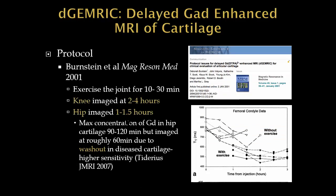After injection, the patient exercises the joint — either flexion and extension or walking on a treadmill for about 10 to 30 minutes. The knee joint is imaged at about 2 to 4 hours because it has thicker cartilage; the hip is imaged a little faster at 1 to 1.5 hours. Although maximum gadolinium concentration in hip cartilage peaks at 90 to 120 minutes, we image at roughly 60 minutes to avoid potential washout in abnormal cartilage and preserve sensitivity.